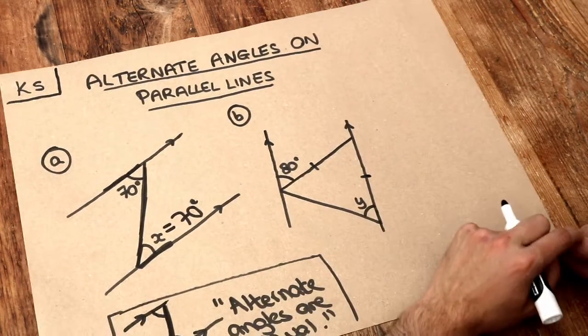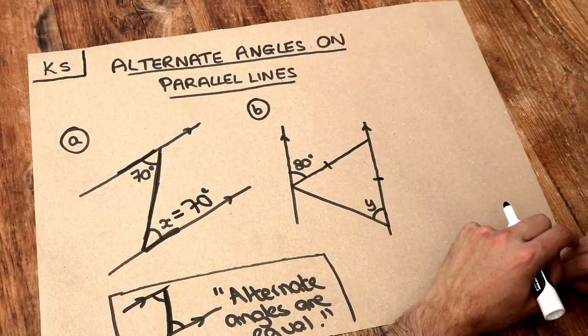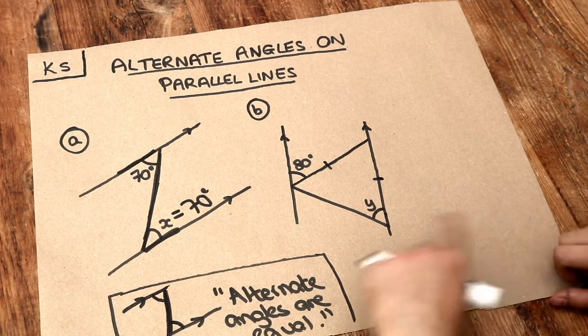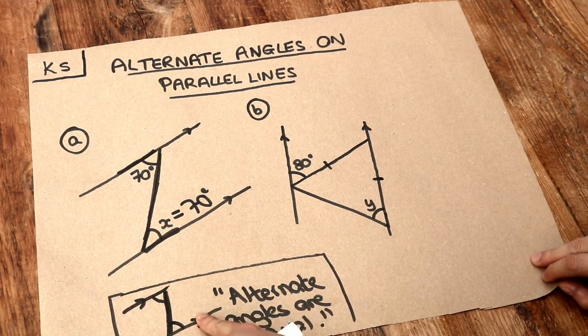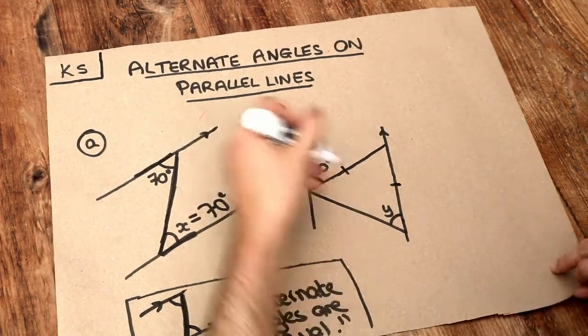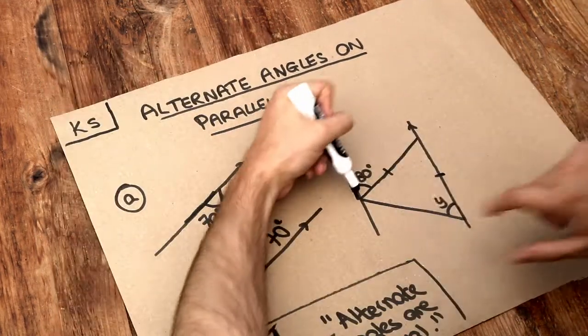What about the second one? A bit more problem solving here. Well, let's see if we can spot a Z. And remember, either end of your Z have to be parallel lines. Can you see that we've got a Z here with the 80?